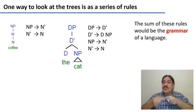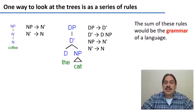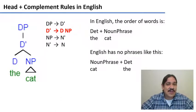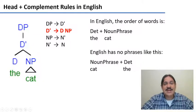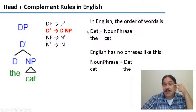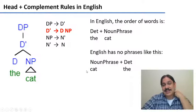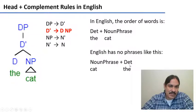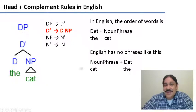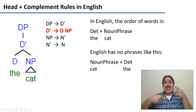Somewhere in your brain as a speaker of English, you must have a rule that tells you that a determiner phrase can eventually project a determiner and a noun phrase, as in 'the cat.' Your brain must not have a rule that can construct a phrase like 'cat the,' where you have the noun phrase first and then the determiner. If your brain does not have a rule that can project this structure, it means that this is not a sentence you could generate using English rules.